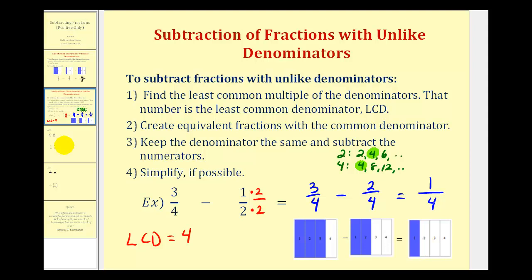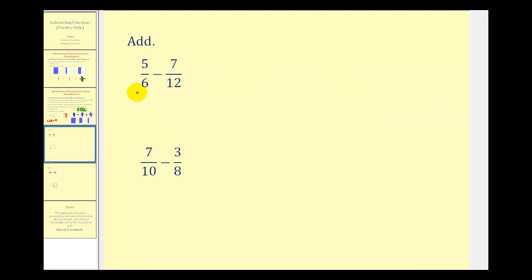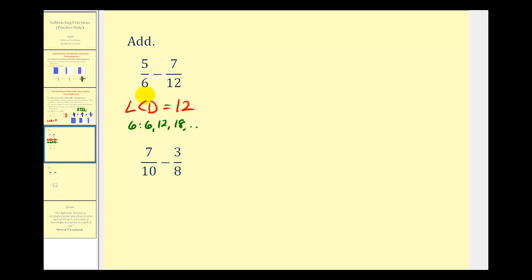Now let's look at more examples. Here we have five-sixths minus seven-twelfths. The first step is to find the least common multiple, or LCD, of six and twelve — the smallest number divisible by both. That would be twelve. We can list multiples of six — six, twelve, eighteen, and so on — and multiples of twelve — twelve, twenty-four, thirty-six, and so on. The least common multiple is twelve.